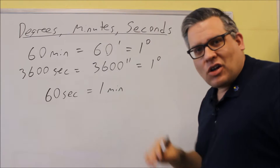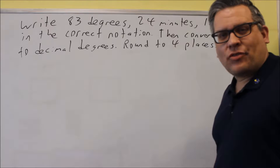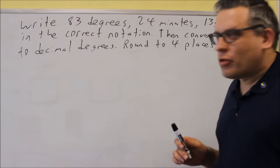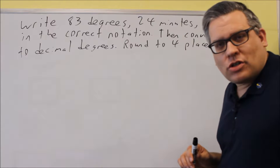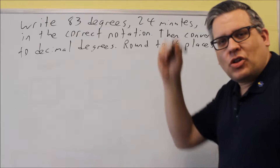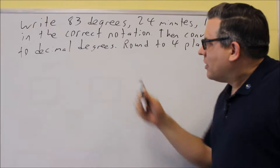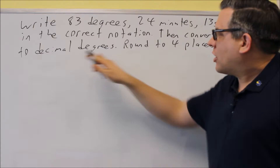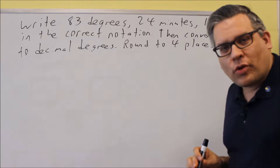Those are the conversions we need. For our first example, it says write 83 degrees, 24 minutes, 13 seconds in the correct notation — meaning use the correct symbols, the single dash for minutes and double dash for seconds. Then once we're done with that, convert it into decimal degrees and round to four decimal places.